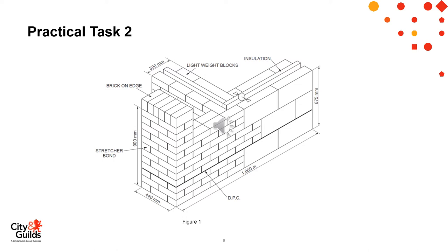This isometric projection gives candidates a clear view of the model which is to be built. It includes several aspects of the bricklaying syllabus, including cavity wall construction, solid walls, attached piers, fitting horizontal damp proof course, brick on edge, block work, fitting insulation, wall ties, and many plumbing points.